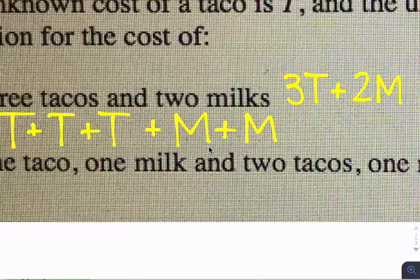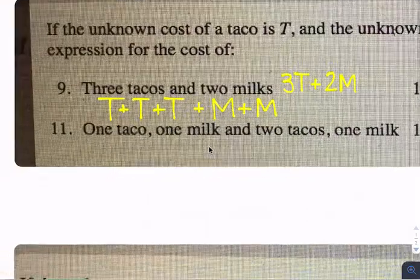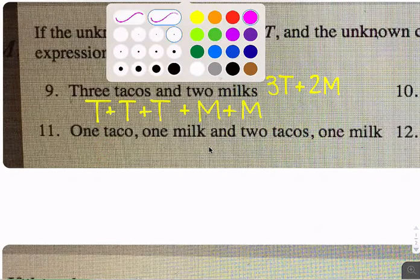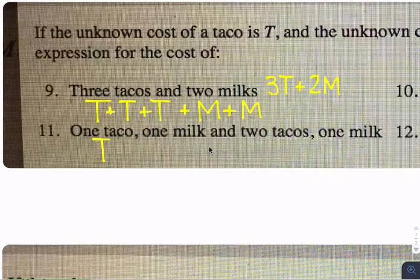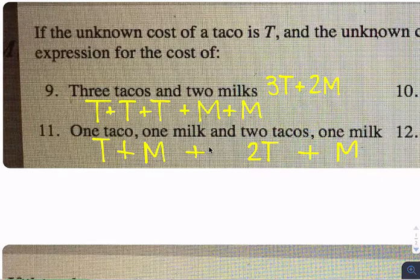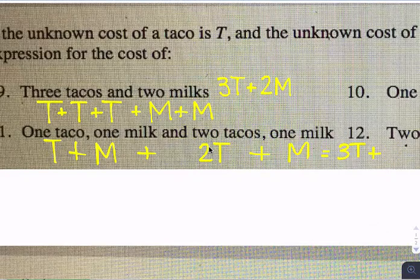Sorry if it's kind of hard to see. The other one: one taco, one milk, and two tacos, one milk. One taco would be T. One taco plus one milk, and then two tacos, and then one milk. Then how many tacos do I have? I have three tacos all together, and two milks. So three T plus two M.